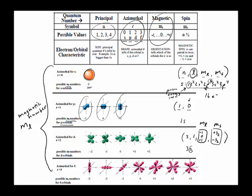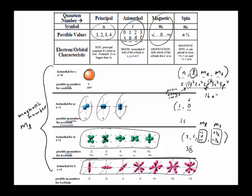A couple of things about the magnetic number: when you get to the d sublevel, it's made of five orbitals and they're all overlapping on a middle center node. So since there are five orbitals, there are five possibilities for the magnetic number. It goes like a number line: negative two, negative one, zero, positive one, positive two. When you get to an f sublevel, there are seven orientations the orbital may be in, so you can have seven different numbers for the magnetic number.